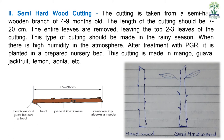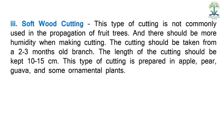This cutting is made in mango, guava, jackfruit, lemon, amla, etc. — आम, अमरूद, कटहल, नींबू, आमला इनके अंदर तैयार की जाती है। ज़्यादातर rainy season में semi-hardwood cutting तैयार की जाती है।